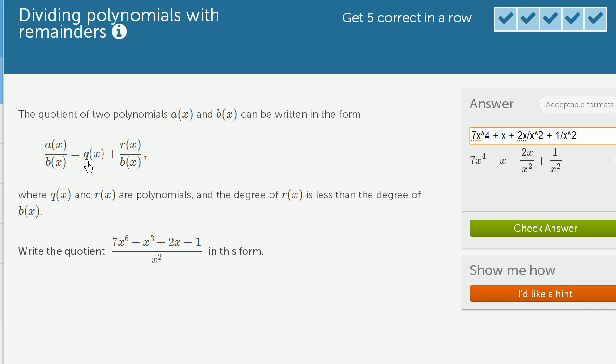They want us to write it q of x, and you could view that as 7x to the fourth plus x. And then they want us plus r of x over b of x. So plus some polynomial over x squared in this case. So instead of writing it as 2x over x squared plus 1 over x squared, we could just write it as 2x plus 1 over x squared.